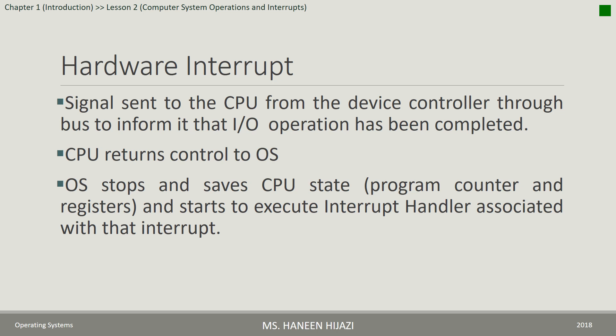بمجرد ما يصير الـ Interrupt، الـ CPU بترجع الـ Control للـ Operating System. الـ Operating System بيوقف الـ CPU والـ Process اللي كانت شغالة وبيخزن الـ CPU State تبع الـ Registers والـ Program Counter اللي بيحتوي على الـ Address of the Next Instruction to be Executed، وبيروح ينفذ الـ Interrupt Handler المرتبط بهذا الـ Interrupt.